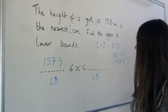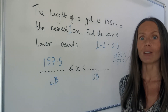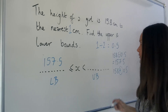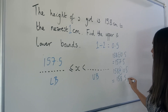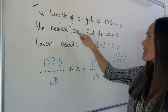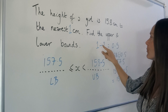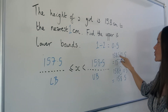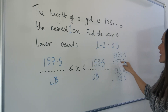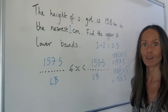To find the upper bound, we add instead of subtract. So instead of minusing 0.5 from 158, we add it: 158 plus 0.5 gives 158.5, which is the upper bound. Remember: take the number you're rounding to the nearest one centimetre, always divide that by two, then subtract to find the lower bound and add to find the upper bound.